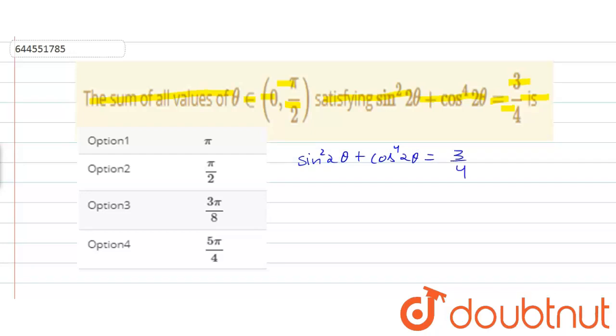We can write this as 1 minus cos square 2 theta plus cos to the power 4, 2 theta equals 3 by 4, because sin square theta plus cos square theta equals 1.